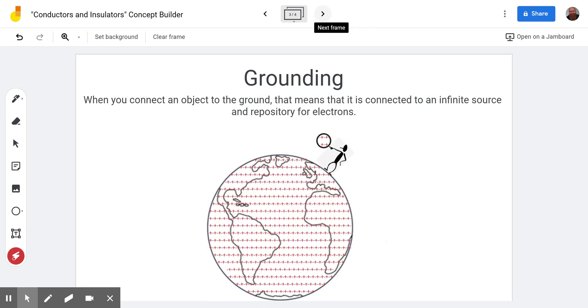Now there is a concept that pops in here called grounding, so I want to explain that really quickly. Grounding is the basic idea of when you connect an object to the ground. You can see the little person here is connecting this object to the ground because your body is a decent conductor of electricity. That means this is connected to an infinite source and repository for electrons.